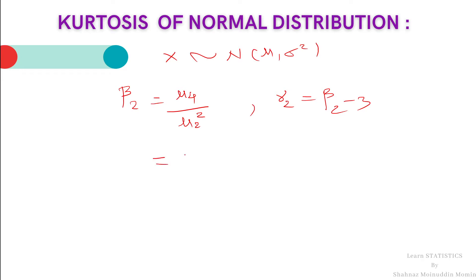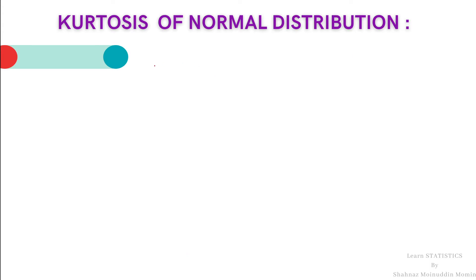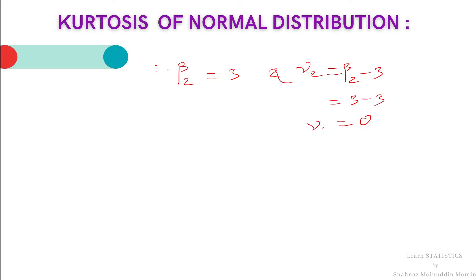We know that the fourth central moment is 3 sigma to the power 4, and the second central moment is sigma squared, so mu 2 squared is sigma to the power 4. Therefore beta 2 is equal to 3 sigma to the 4 divided by sigma to the 4, which equals 3. Hence beta 2 equals 3, and gamma 2 is equal to beta 2 minus 3, which is 3 minus 3, equal to 0. These are the coefficients of kurtosis.